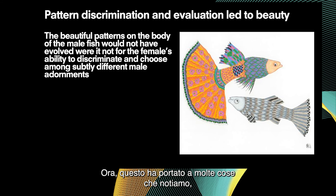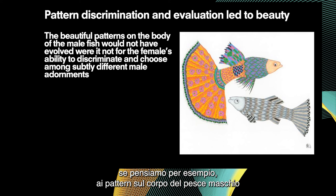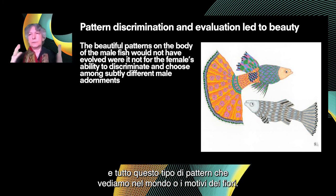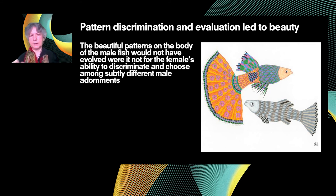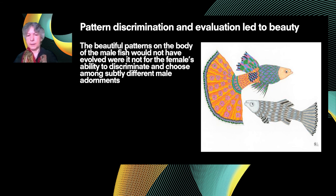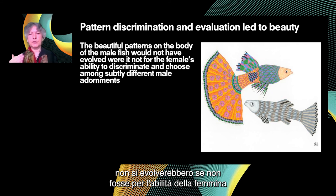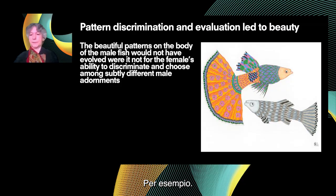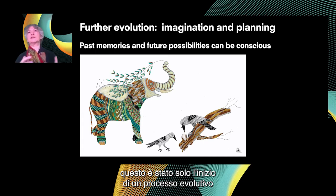During the Cambrian, dominated mainly by arthropods but also including small fish, there was a great battle for existence driving evolutionary interactions among species and huge diversification, leading to both antagonistic and cooperative arms races with many feedbacks. This led to a lot of what we see today: the beautiful patterns on the body of male fish, the haunting songs of birds, the patterns of flowers — these would not have evolved were it not for creatures being able to discriminate among them. The beautiful patterns on male fish would not evolve if not for the female's ability to discriminate between different patterns and choose among them. I don't think we would have beauty without consciousness.